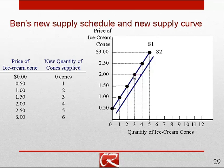So a higher overall level of supply is a rightward shift of the supply curve. And as we'll see later, that is equivalent to a decrease in the price of supply, but we'll get to that later.